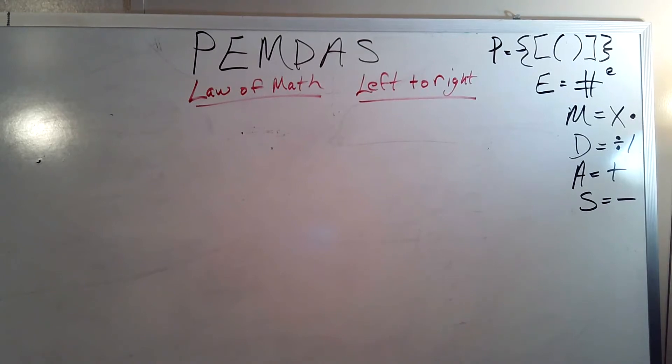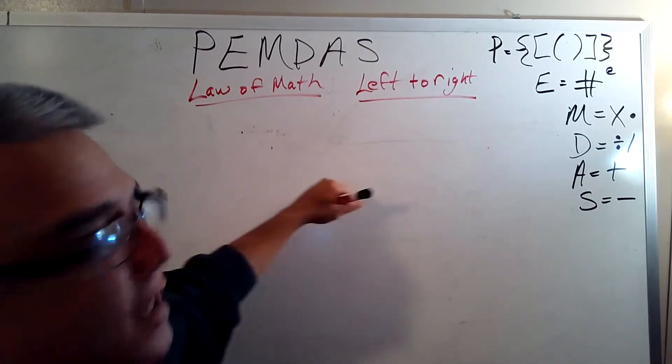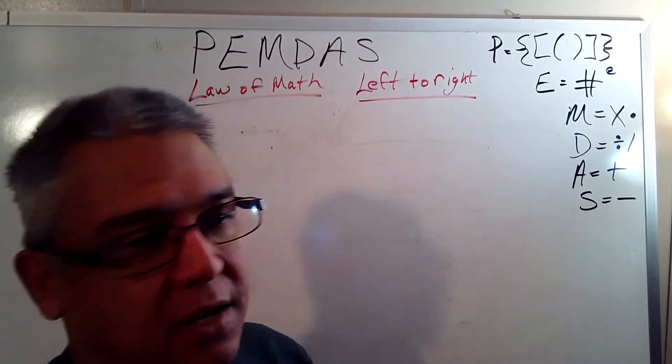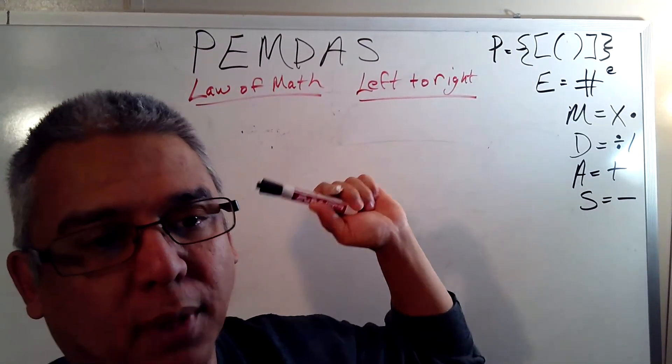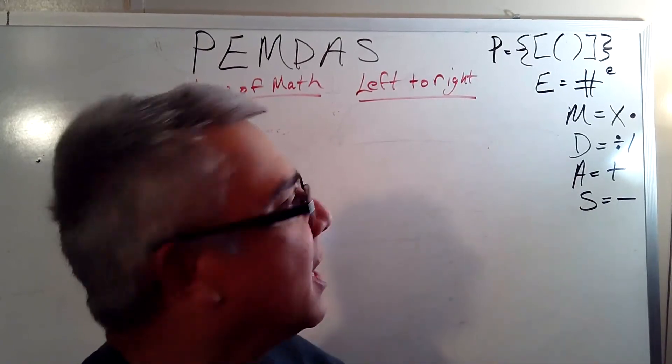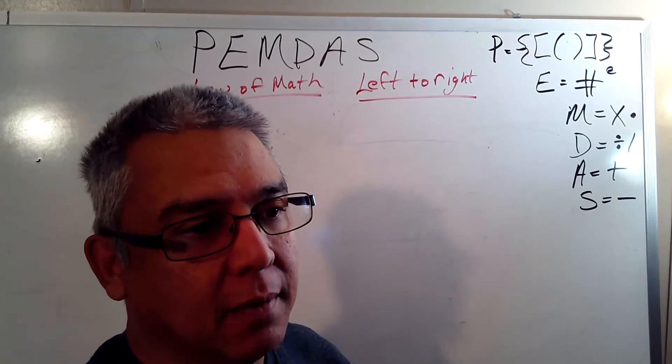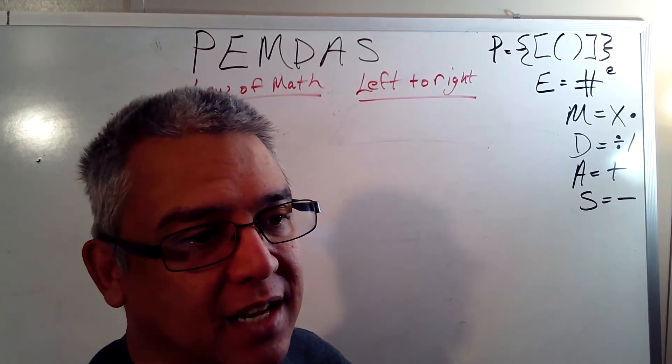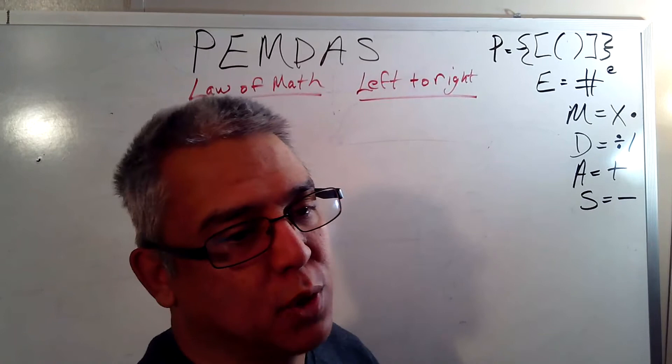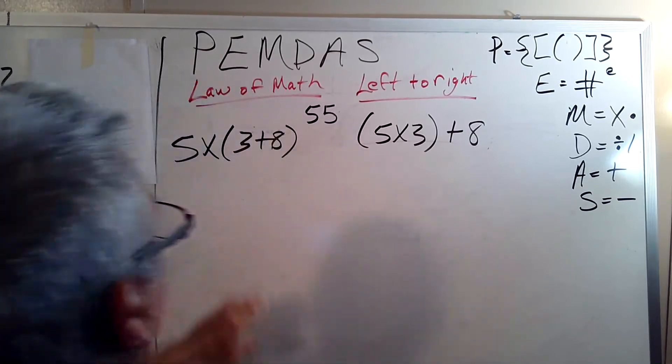So we have talked about what please excuse my dear Aunt Sally is. It is the law of math and we must work it from left to right. The P stands for parentheses, which could also be applied to braces and brackets. The E is that itty bitty E stands for exponents. That hashtag is actually the pound sign, which means, hey, I'm a number. And then the M is my, multiply, D, divide, dear, A, aunt, add, and S, Sally, subtract. Enough of that. Now we're getting ready. Do some work. I've written a problem on the board.